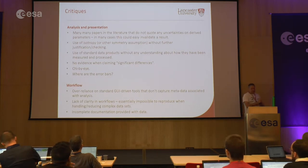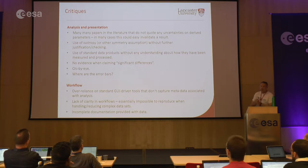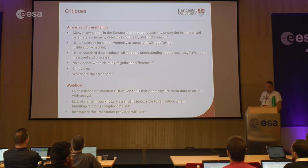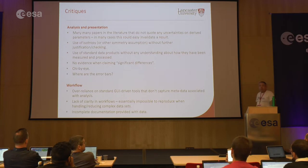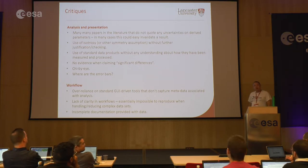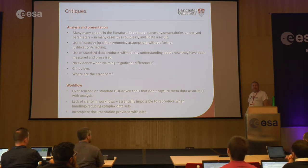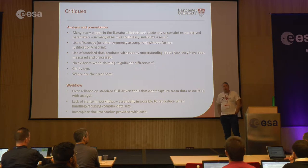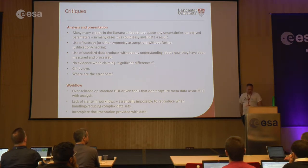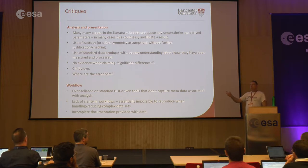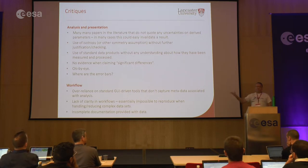Critiques I see in how analyses are done and presented in the literature: I see many papers that don't quote any uncertainties on anything. I think in many cases that could easily invalidate a result. I don't know if people avoid putting errors on things because it might invalidate their result, but I don't see why that should prevent publication. If you come out with a measurement showing something is non-zero within one sigma but zero lies within two sigma, that's still worth publishing and suggests future research directions.